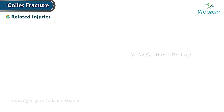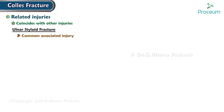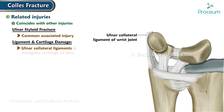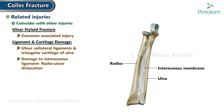Collis fracture often coincides with other injuries. For instance, ulnar styloid fracture is a common associated injury. There can also be rupture of ulnar collateral ligaments and the triangular cartilage of the ulna. Damage to the interosseous ligament can result in a radio-ulnar dislocation.